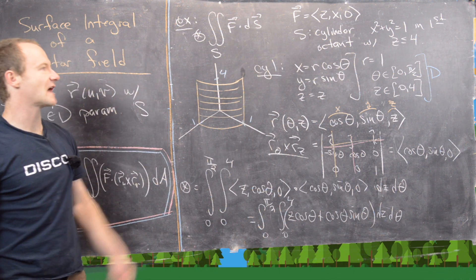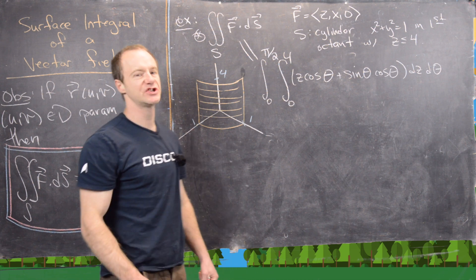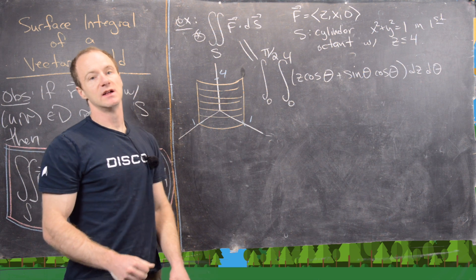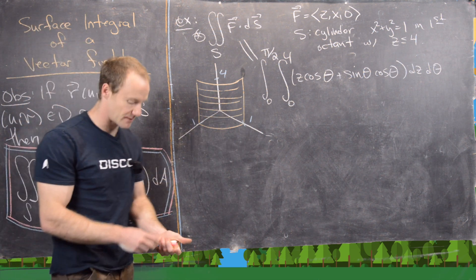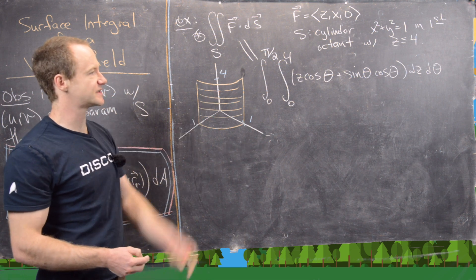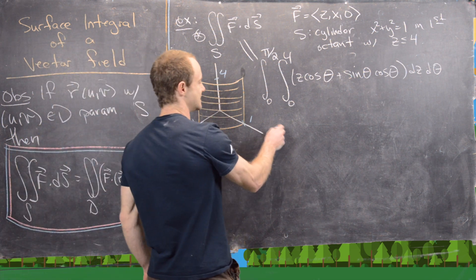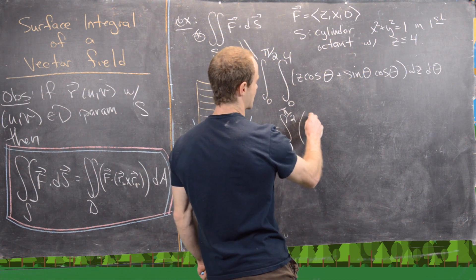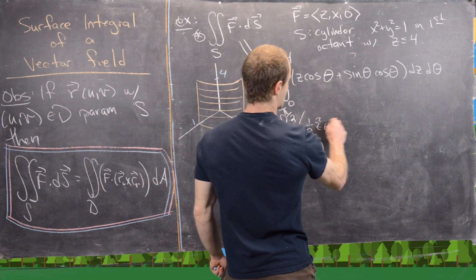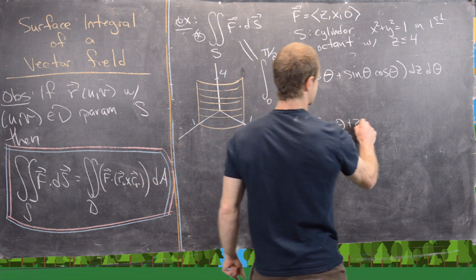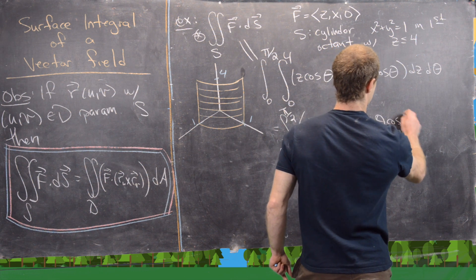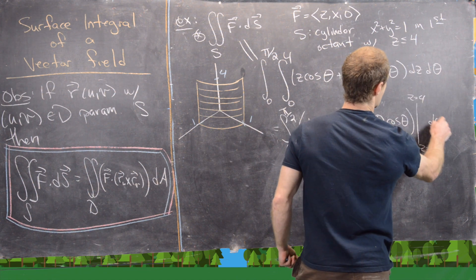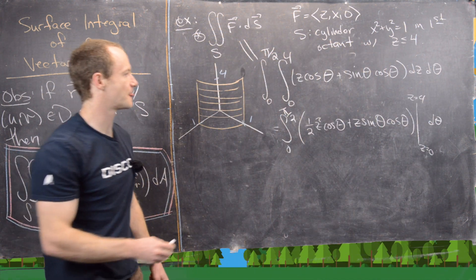We broke the surface integral down to a double integral over a rectangle. The Z integral is on the inside, so we do that first. Taking the antiderivative gives ½Z² cos θ + Z sin θ cos θ, evaluated from Z = 0 to Z = 4.